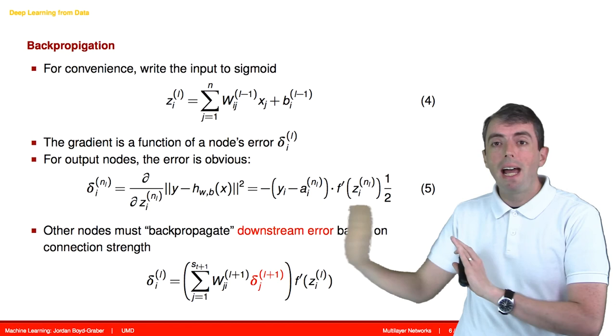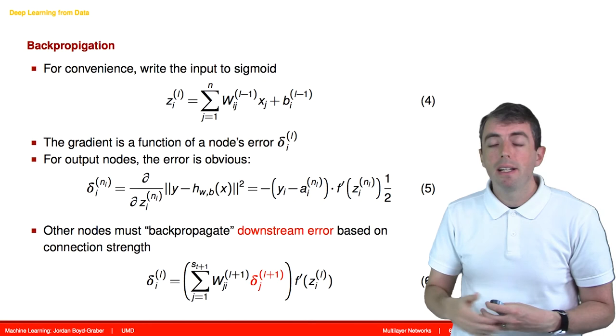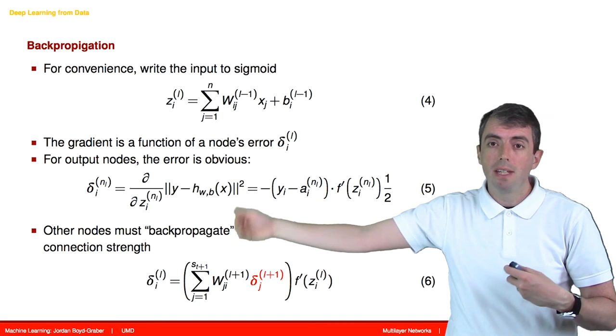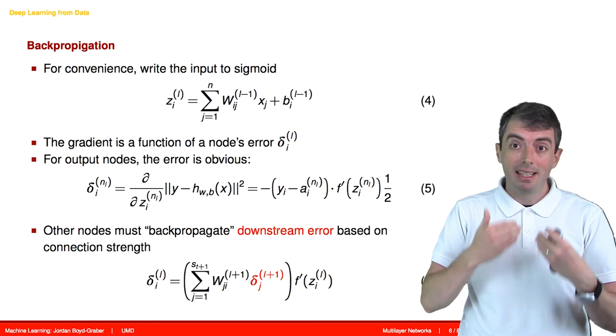It's called backpropagation because in the normal operation of a neural network, information is flowing from the input to your output node. But when you're computing the error, you're starting at the output node, seeing what mistakes were made.